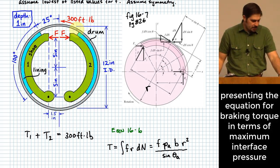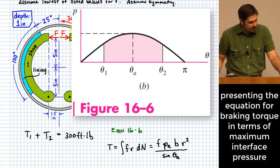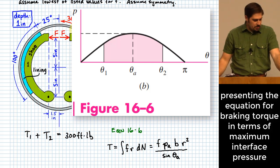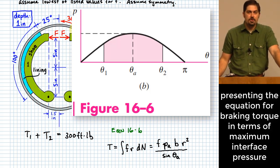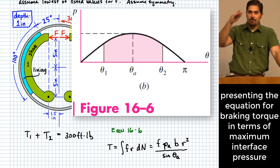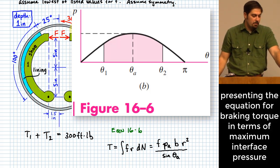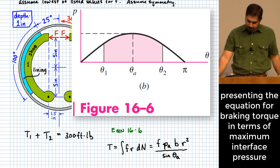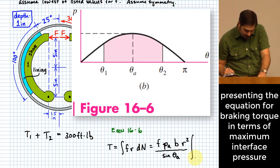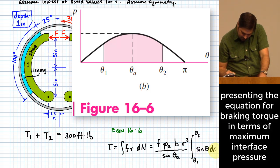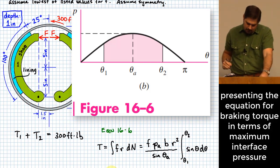Whenever you set up a drum brake like this, there will be a sinusoidally shaped pressure distribution across the face where the pressure is applied. They give a picture of how that distribution occurs in figure 16-6. The point where the distribution of pressure goes highest is at the angle theta_A. This is also where they discuss short shoes versus long shoes. The difference is: does the shoe include the peak point of the sine curve or not? Fortunately, we are dealing with a long shoe here, which makes this a little bit more simple. This all gets multiplied by an integral from theta_1 to theta_2 of sine(theta) d(theta).